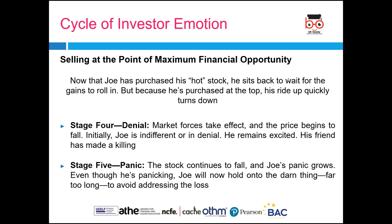The next stage is selling at the point of maximum financial opportunity. The investor sits back to wait for the gains to roll in, but he purchased at the top, so his ride up quickly turns down. In stage four, denial sets in — they are not ready to believe that the stock price is going down and feel it will bounce back as just a temporary phase. The investor still remains excited and his friend has made a killing — maybe his friend has even sold the stock and booked his profits.